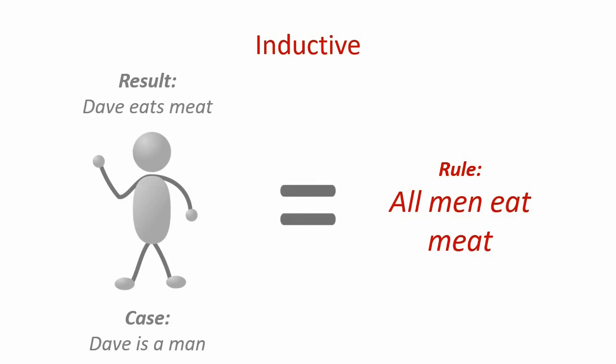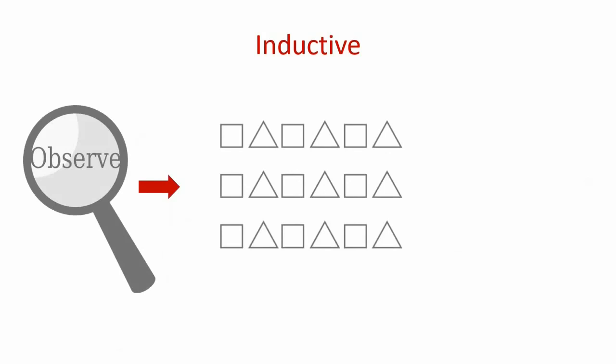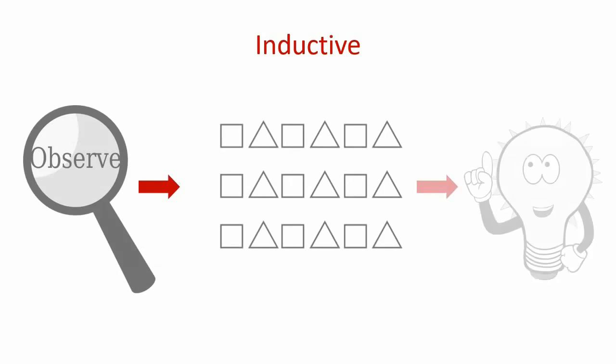Now let's focus on the process of doing inductive research. Since induction is the inverse approach of deduction, we start the research process by observing our phenomenon. We do this to identify patterns. As an inductive researcher, your observation must be done until such time you are scientifically convinced of the pattern. Based on this pattern, you may now come up with the rules or theories.